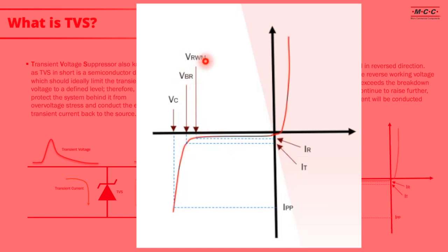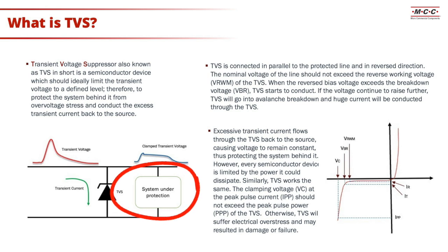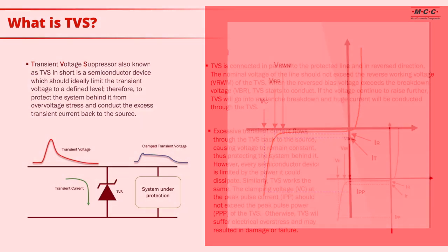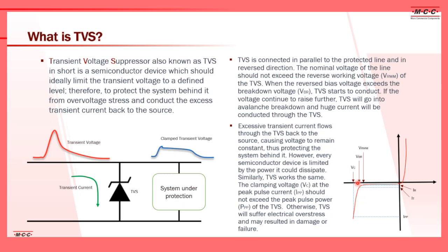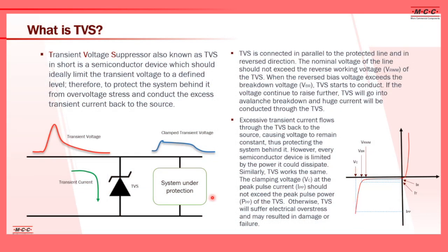This is the breakdown voltage of the TVS. The chosen TVS diode should have a breakdown voltage higher than the working voltage. For example, in a 12-volt system, the selected TVS should have a breakdown voltage higher than 12V, such as 14V. When a transient exceeds the 14V or the breakdown voltage, it goes into avalanche breakdown, conducting large current through the TVS and clamping the voltage at a particular level to protect the system. However, if the transient current exceeds the power the TVS diode can dissipate, the TVS may suffer electrical overstress or damage.